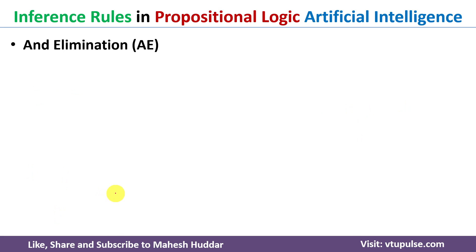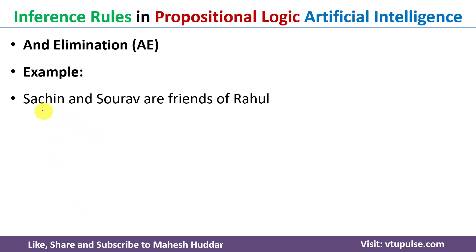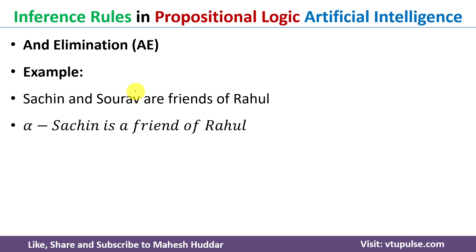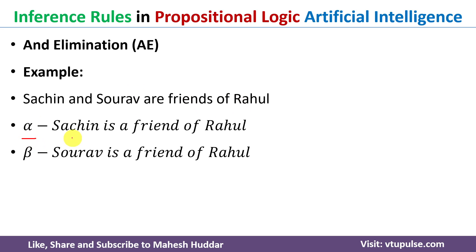The next rule is And Elimination. We take the statement 'Sachin and Saurav are friends of Rahul.' We can break this into primitives: alpha is 'Sachin is a friend of Rahul' and beta is 'Saurav is a friend of Rahul.' In propositional logic, this becomes alpha and beta.